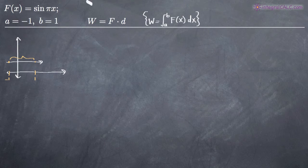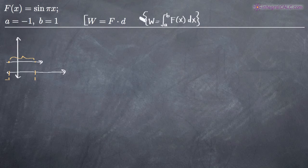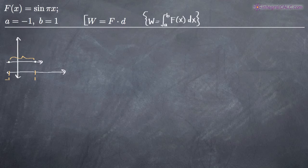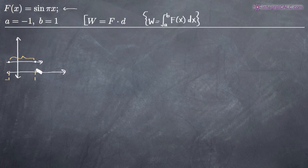When we have a constant force, we can easily use the work formula — for example, if our force is four and our distance is two from negative one to positive one, work equals force times distance, giving us eight units, whether it's foot-pounds or something like that. But here we have a variable force modeled by sine of pi x, so the force might be stronger sometimes and weaker at other times.